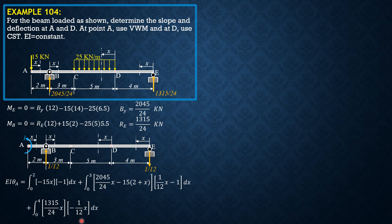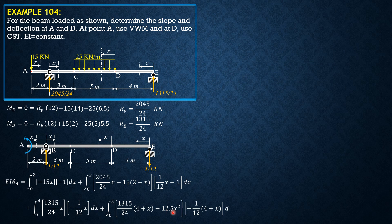In the next section, plus the integral of 1315/24·x times the virtual moment, then plus the integral of (1315/24·(4+x) − 25·x·(x/2)) — which simplifies to −12.5x² — times the virtual load term of −1/12·(4+x).